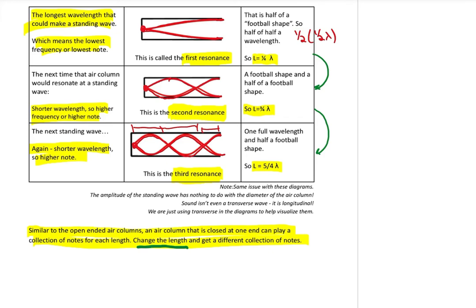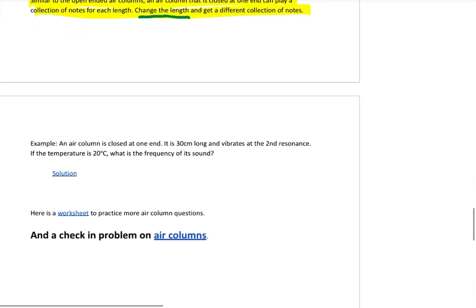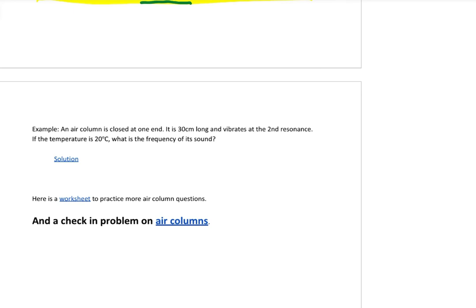Here's another example: 30 centimeters long and second resonance. So second resonance tells you what the standing wave looks like. Remember you've got to follow the rule: node at one end and you're going to the second antinode. From the picture and the length you can figure out the wavelength. From the temperature you can figure out the speed. And putting it all together, once you know those two, then you can figure out the frequency. Take some time, watch the video. That solution there's a worksheet with more to practice.